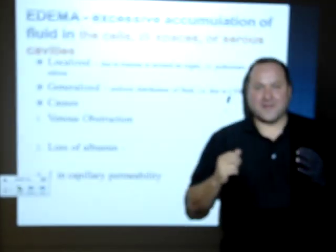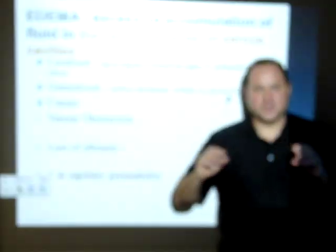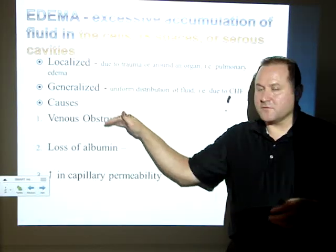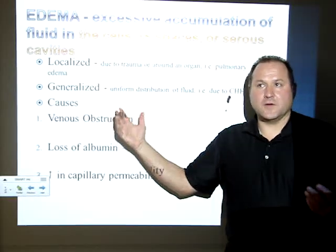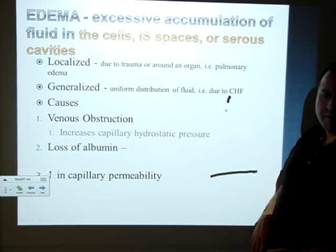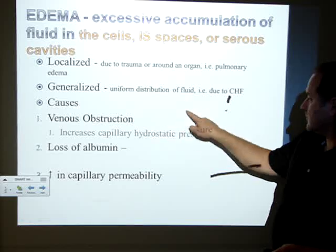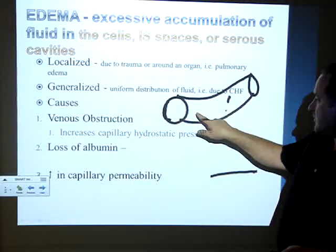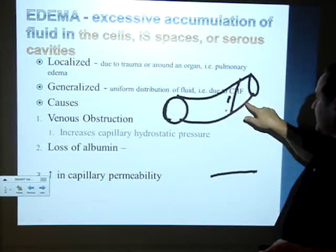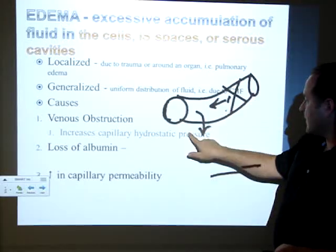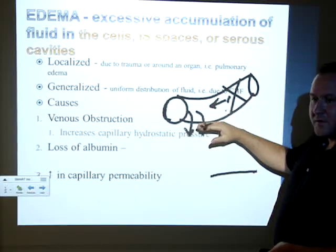With congestive heart failure, you have a big floppy heart that can't function properly to generate the pressures needed. The lack of pressure from the heart makes it so fluid gets stuck in places it shouldn't be. Venous obstruction is one reason for edema — it increases capillary hydrostatic pressure. If you have an obstruction on the venous side, it creates back pressure that pushes things out of the bloodstream into the tissues.